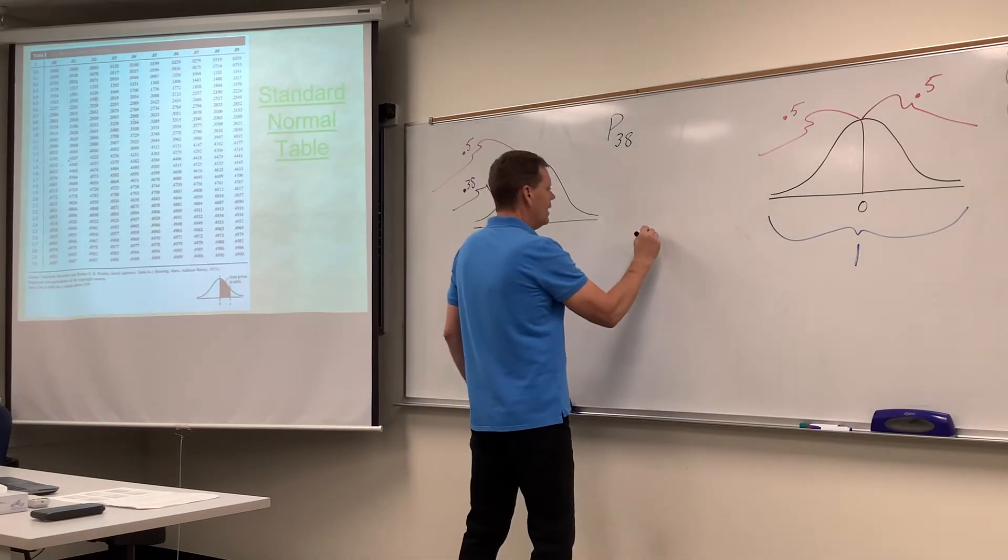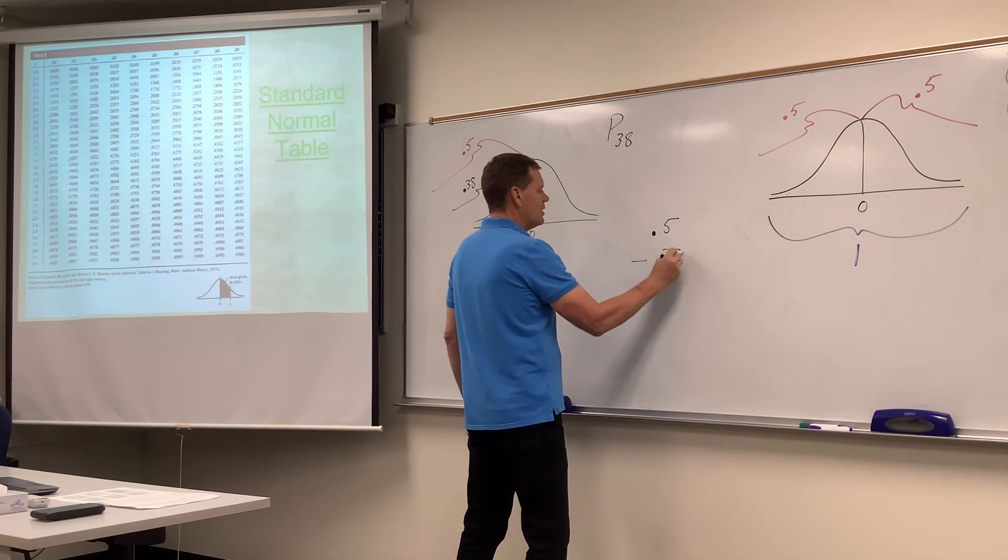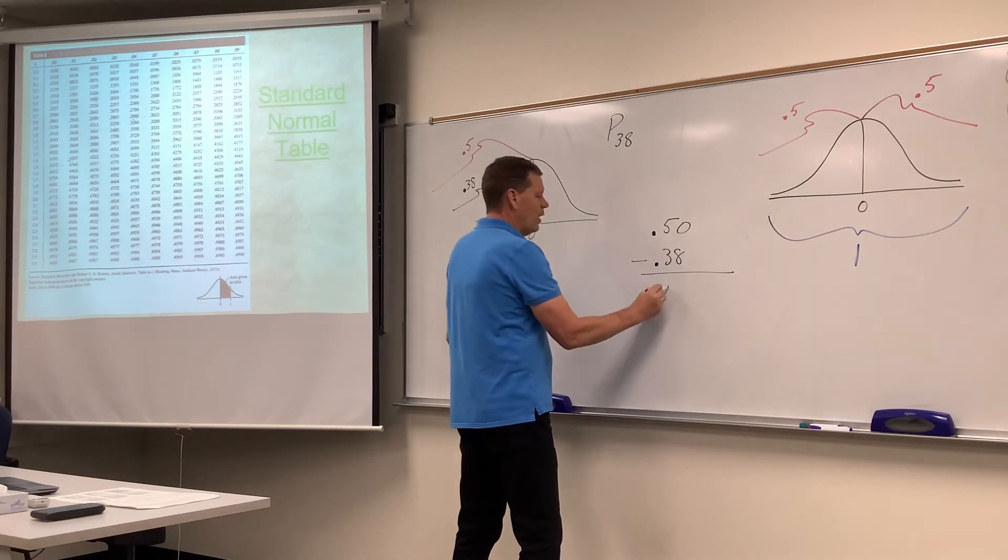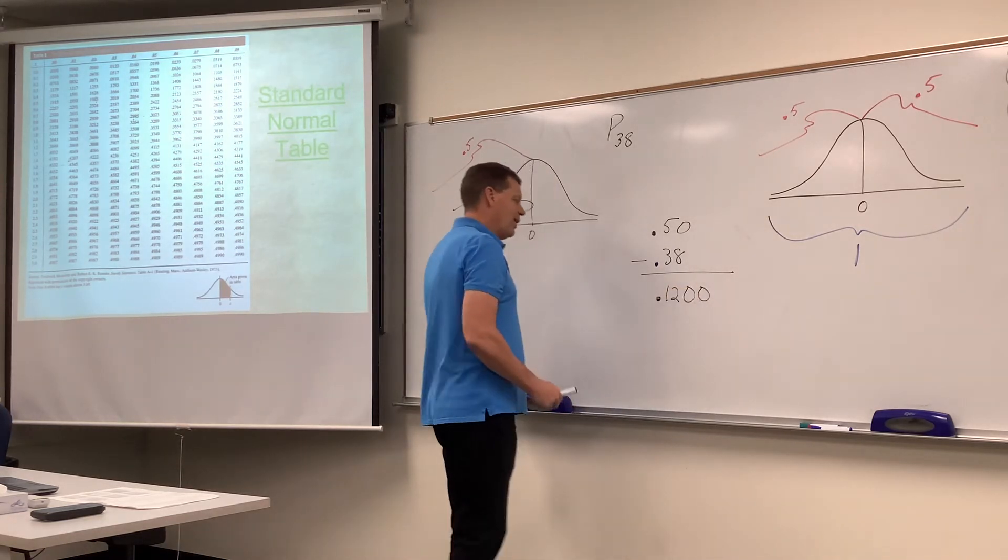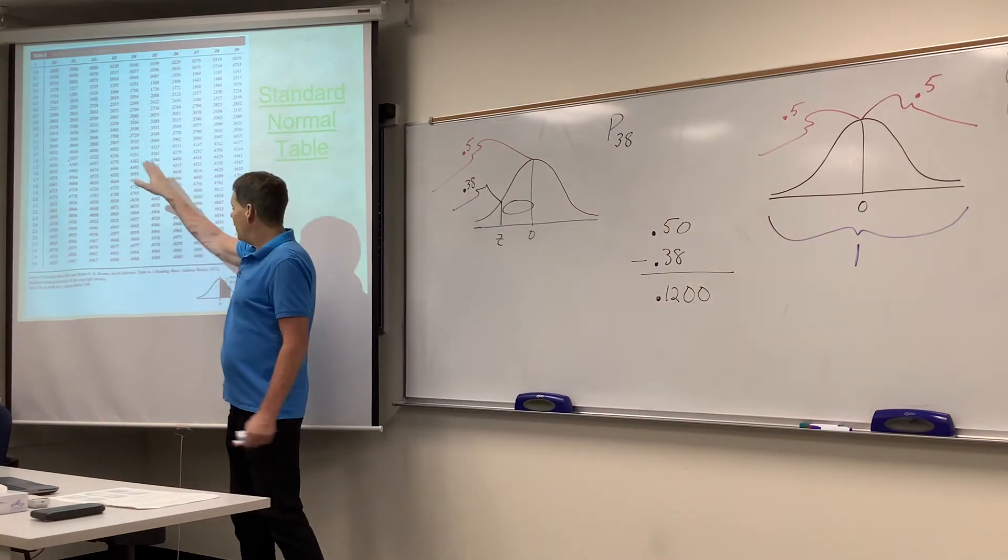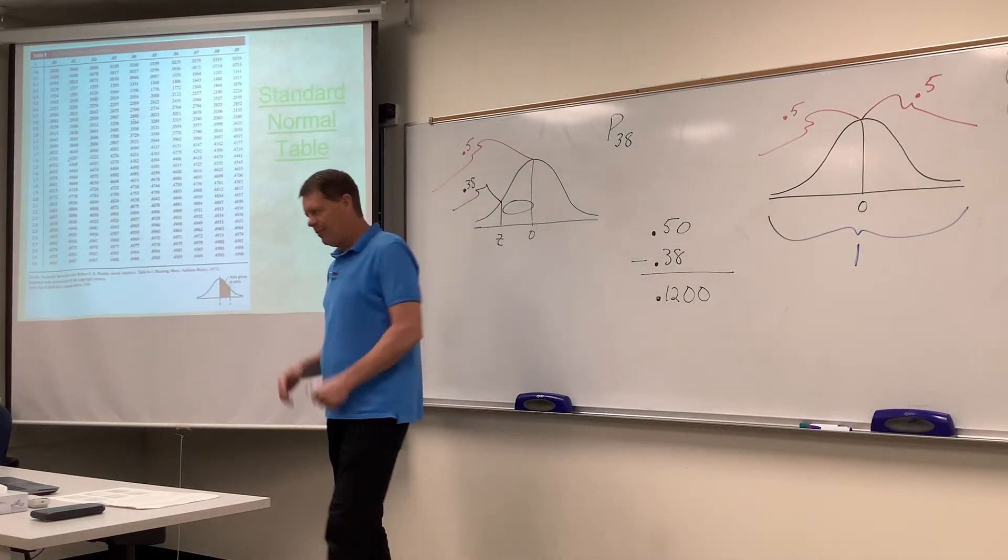So if we take that lower half of the bell curve and subtract that 38% from it, that's 50, that's 12%. Now, for the purposes of our table, let's put the extra two zeros on there. Because again, this particular table, these areas that are in the body of the table are four decimal places. So there we go. That's a middle sliver.